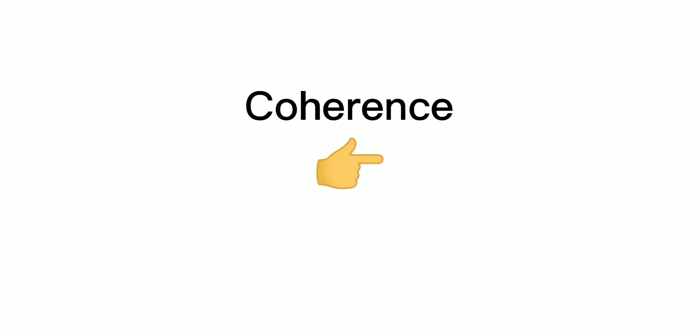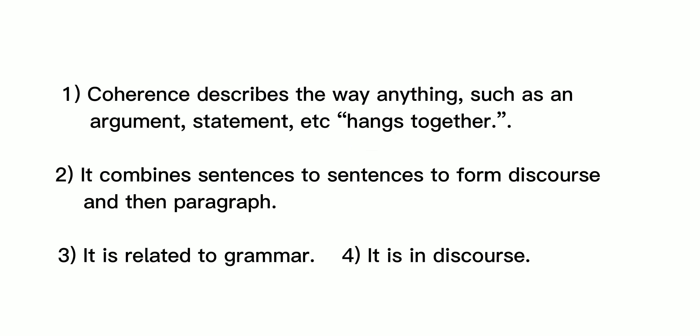Let's move towards coherence. 1. Coherence describes the way anything, such as an argument, statement, etc., hangs together. 2. It combines sentences to form discourse and then paragraphs. 3. It is related to grammar. 4. It is in discourse.